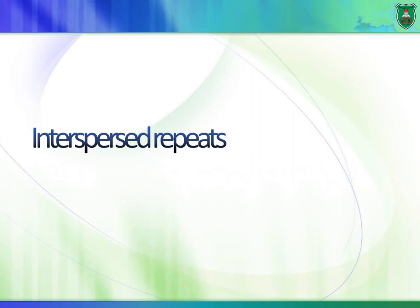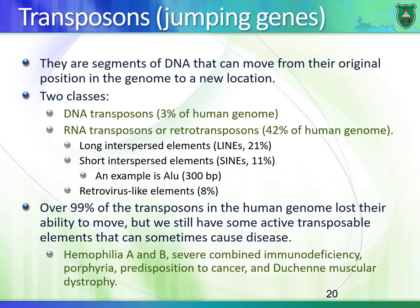Let's talk about interspersed repeats — the same sequence found in different areas of the human genome. The main type is known as transposons, also called jumping genes. These regions of the human genome can change location from one region to another. Most of them have lost the ability to change location, but some can, and when they do, they can cause certain diseases.